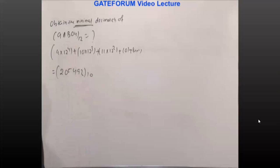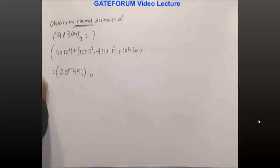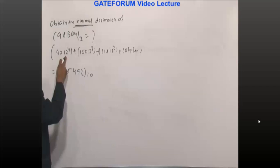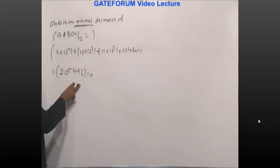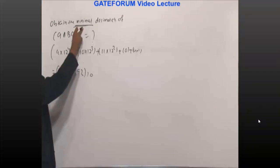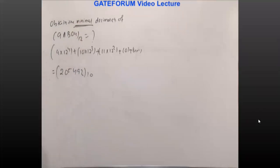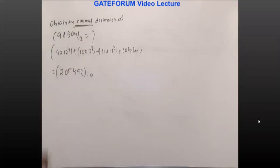Simply take a calculator and add these things. Minimal means we take the minimum base. If we substitute 13 instead of 12, that value will be greater. But we need the minimal decimal equivalent, so the value should also be minimum, which means base 12 gives us the answer.